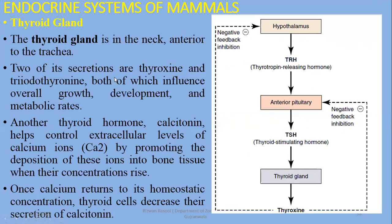Two of the thyroid's secretions are thyroxine and triiodothyronine. The difference between them is that thyroxine (T4) has four iodine atoms attached, while triiodothyronine (T3) has three iodine atoms. Both are modified forms of the amino acid tyrosine and both influence overall growth, development, and metabolic rates in humans and other organisms.